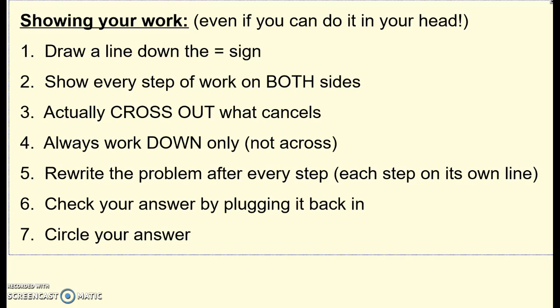We are still going to follow all these seven rules that we had before. Still going to show our work the same way. So draw the line down the equal sign, write down every step, cross out what cancels, only work straight down. Don't go across and don't let things flip-flop what side of that line that they're on. So if x is on this side, x stays on this side the whole time. Rewrite the problem after every step. So now these are going to take a little bit more work because there's going to be one more step before you get x by itself. And then check your answer and circle it when you're done.